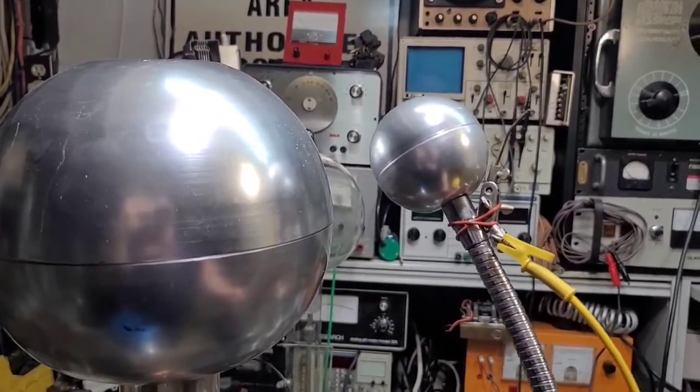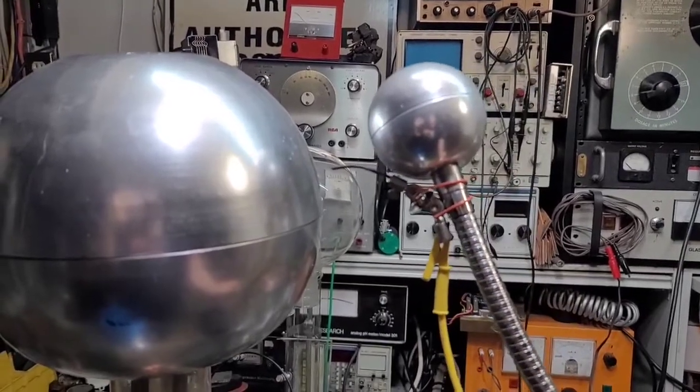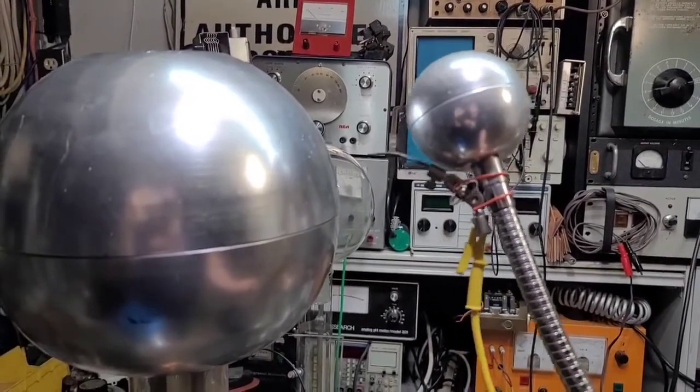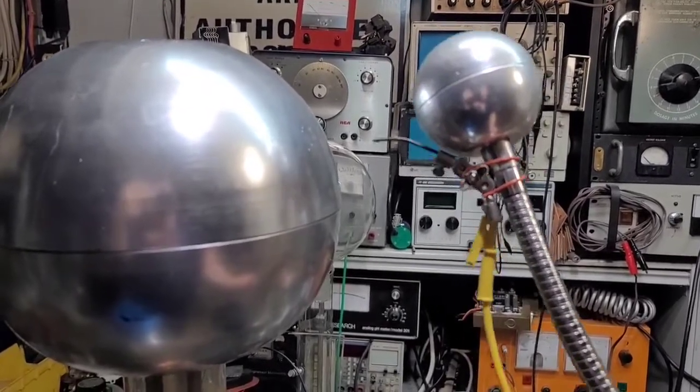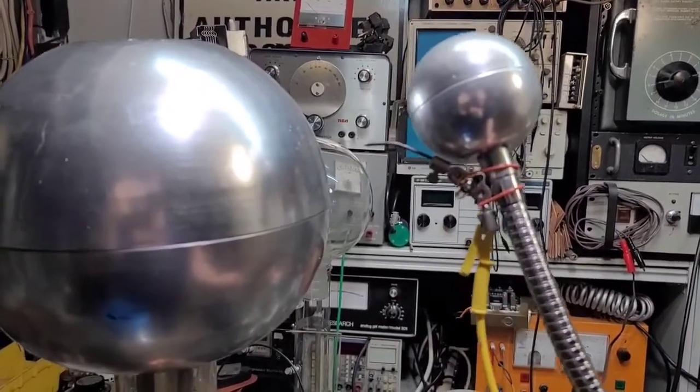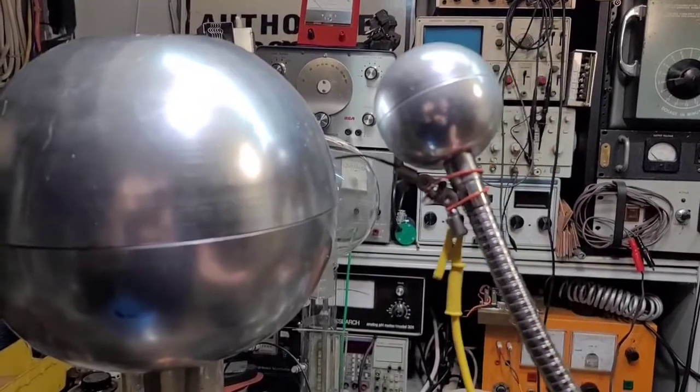Instead, you put lightning rods on the building like this point here. This point allows the electrons to concentrate at the tip and they bleed off the bigger charges, kind of like poking a small hole in a balloon instead of popping it. You're bleeding off that pressure very controlled in a very small manner.